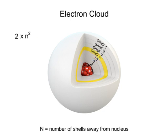And for the fourth shell, it would be 2 times 4 squared, or 2 times 16, yielding 32 electrons, and so on.